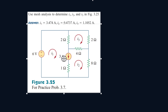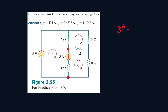We see that we have a current source between two reference points. So that means we can technically ignore this portion as long as we write an equation for this 3-amp source. So 3 amps is equal to I1, as it's moving in the direction of the 3-amp source, minus I2, which is moving in the opposite direction. And we don't actually have to take this one-ohm resistor into account for our equation.